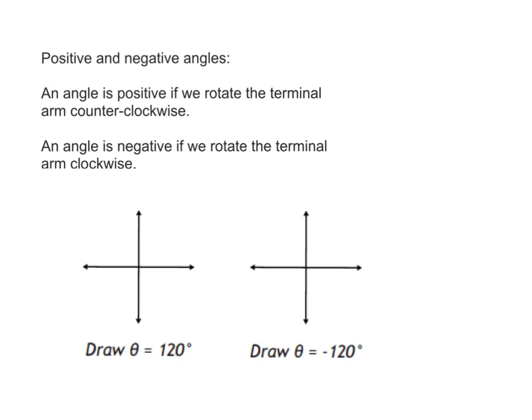Positive and negative angles is the next thing that I have here. So you may need to skip down on your sheet, negative angle. An angle is positive if we rotate the terminal arm counterclockwise. An angle is negative if we rotate the terminal arm clockwise.